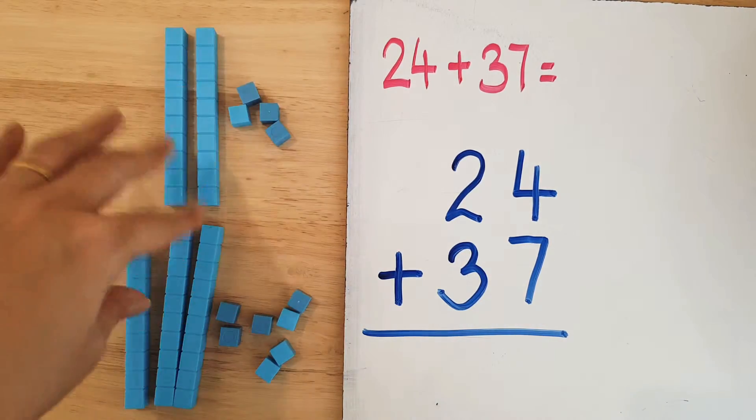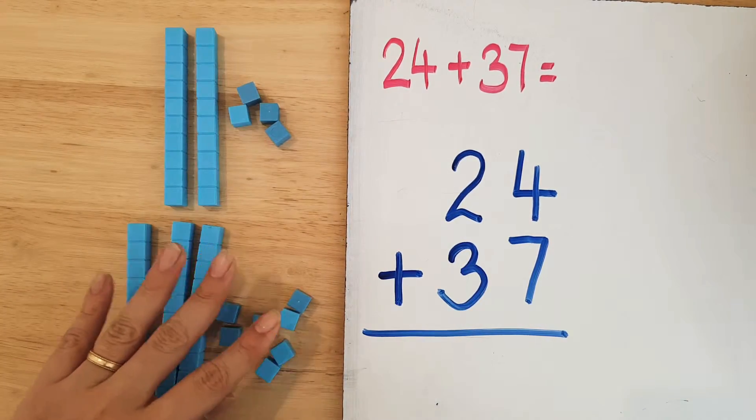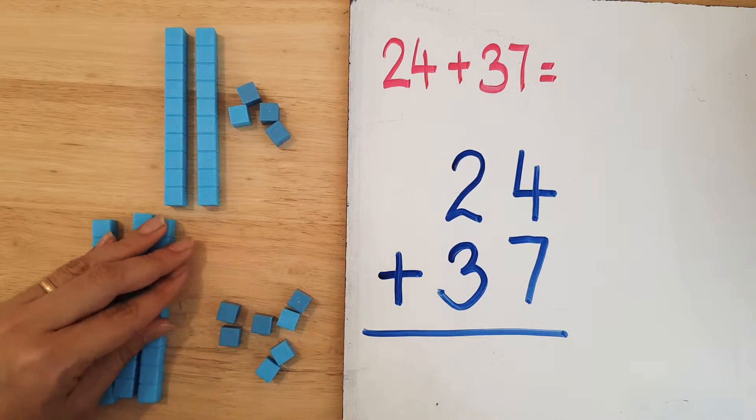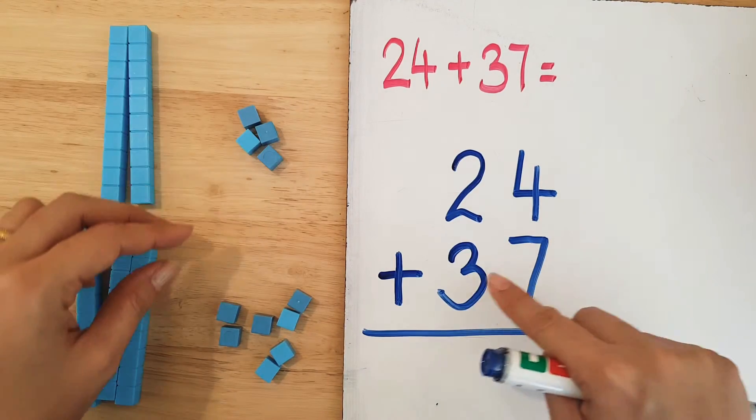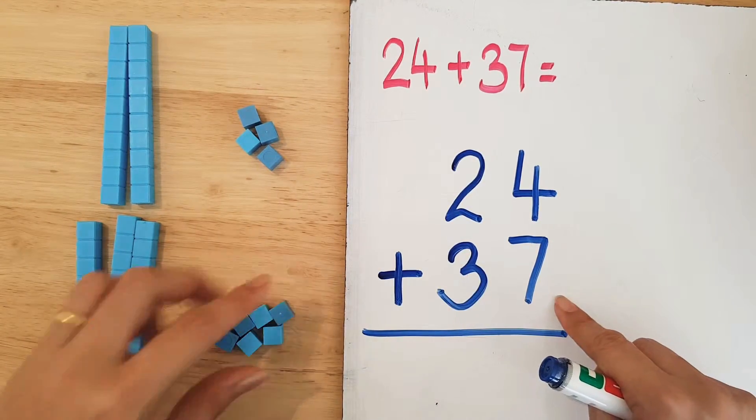We want to put these blocks together, 24 and 37. So the first thing I'm going to do is add up the ones. Let me put the tens aside. I'm going to put four ones plus seven ones.